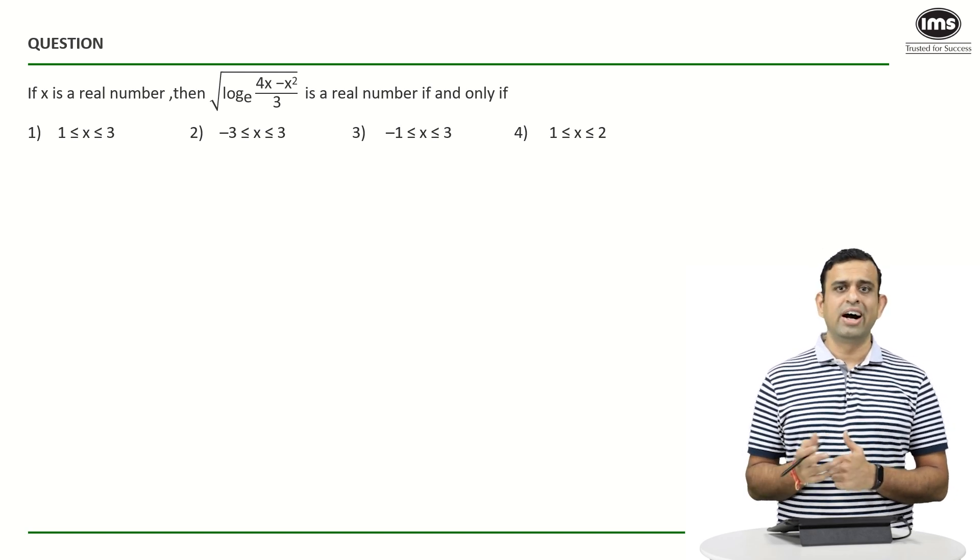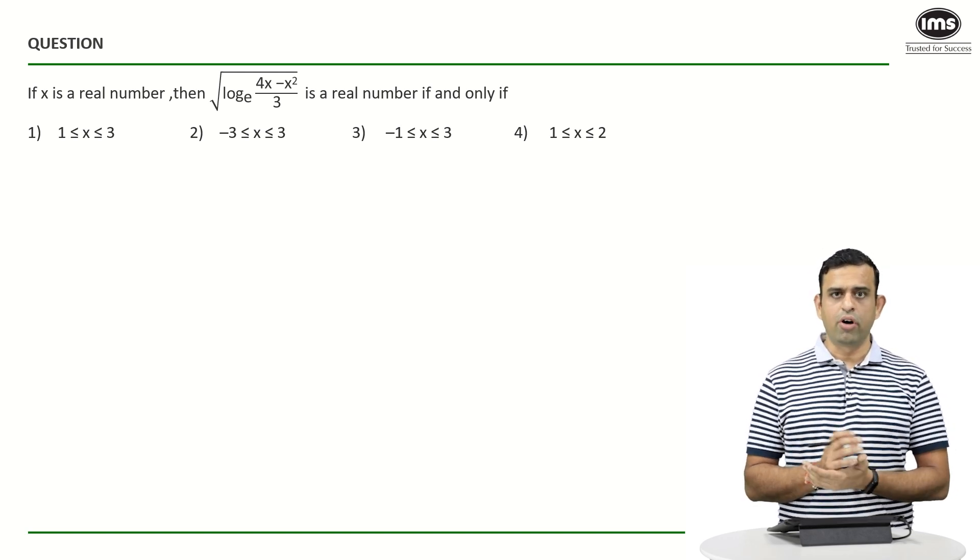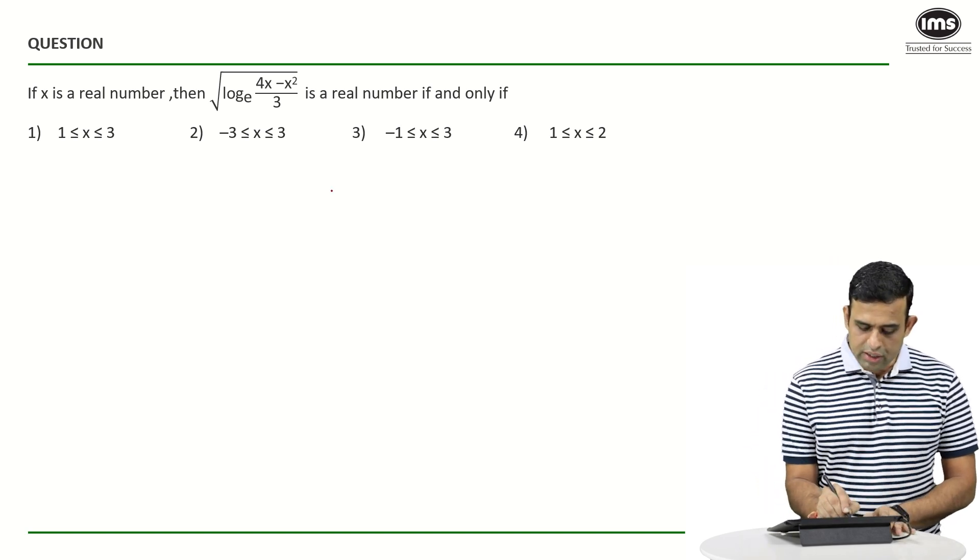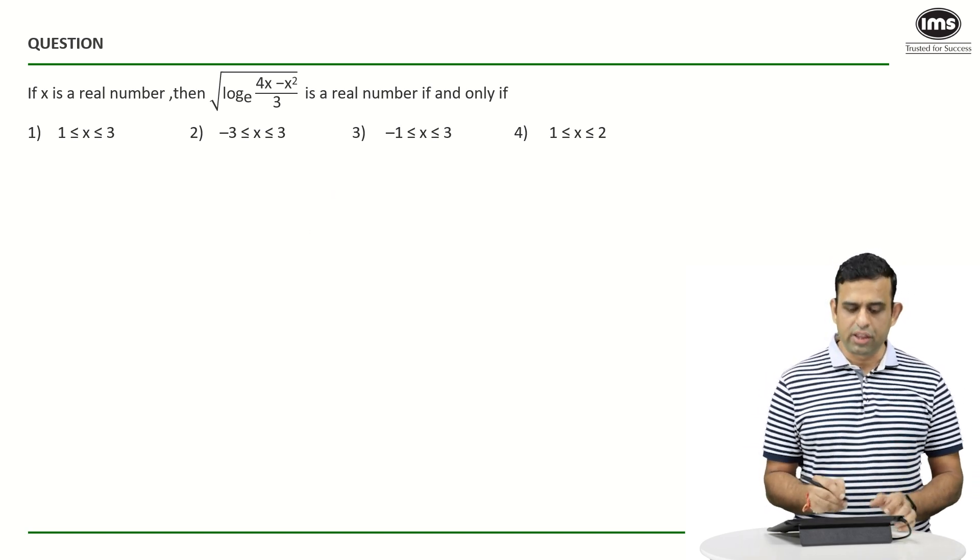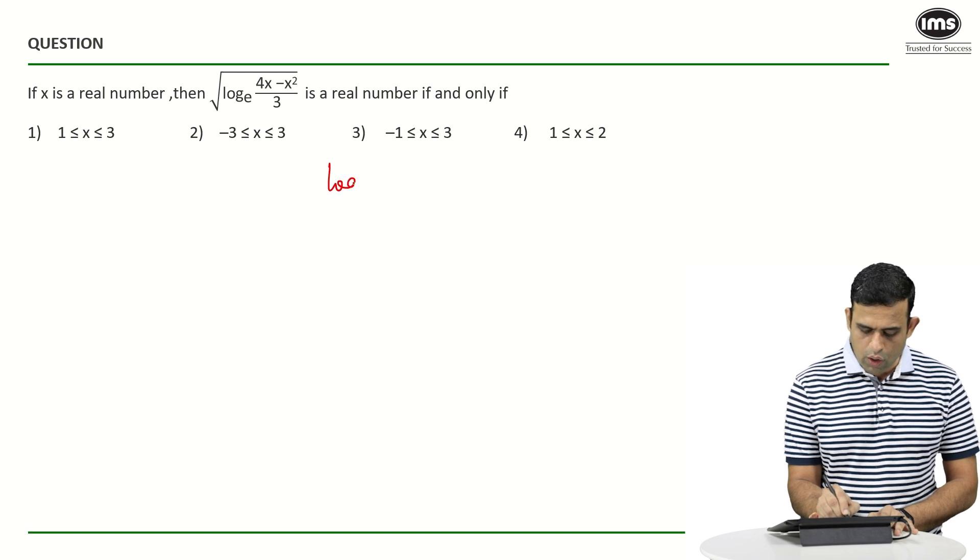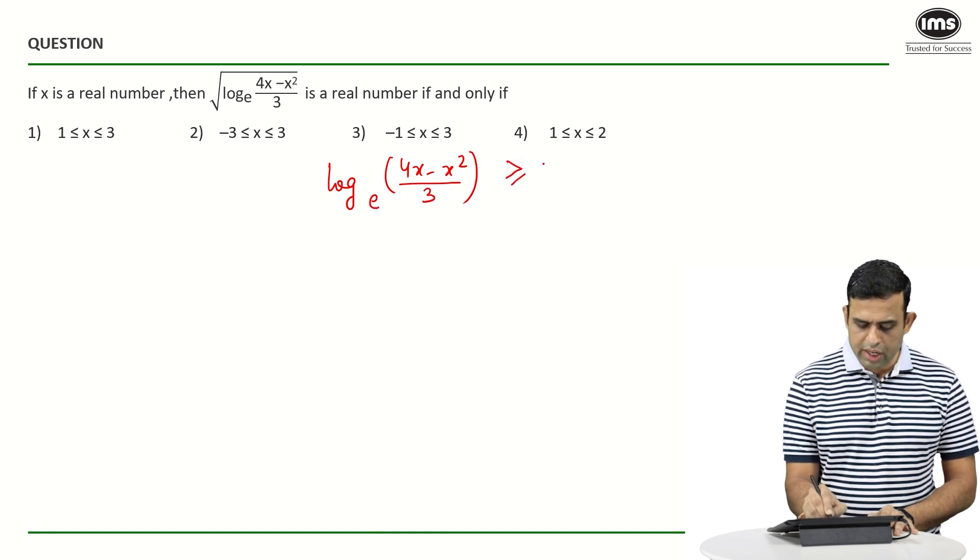So for the function to be defined, the term inside the root happens to be the logarithm term. So we can say log of (4x - x²)/3 to the base e - I want this term to be more than or equals to 0. It can't be a negative term inside the square root since then the value becomes imaginary.